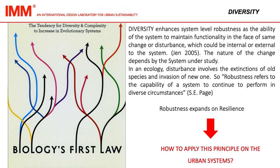The nature of the change depends on the system under study. In ecology, disturbance involves the extinction of old species and invasion of a new one. Robustness refers to the capability of a system to continue to perform in diverse circumstances. Robustness expands on resilience. So, how to apply this principle to urban systems?